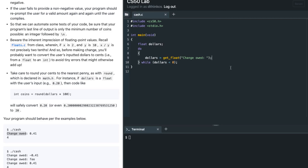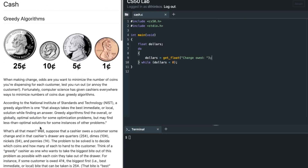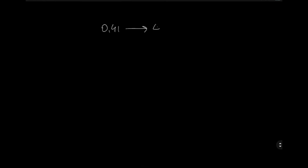After getting the input, the logic works like this: you take 0.41, multiply it by 100 to get 41 cents. We call that variable cents — essentially you take the input from the user and multiply it by 100. We also have a variable called coins which tracks the number of coins used.